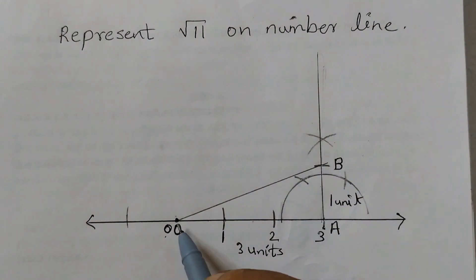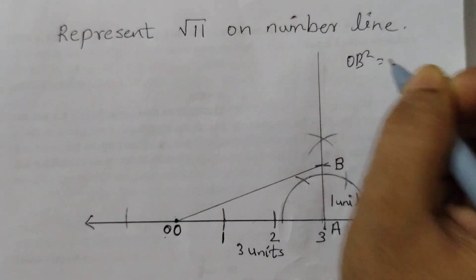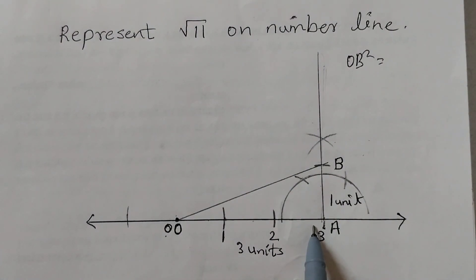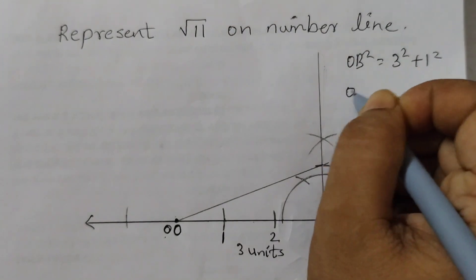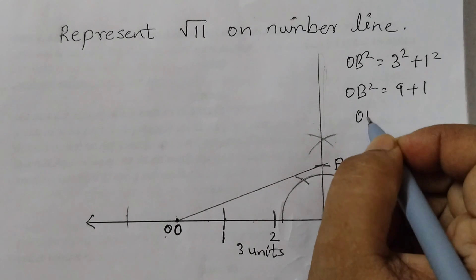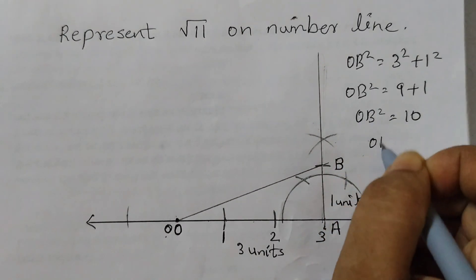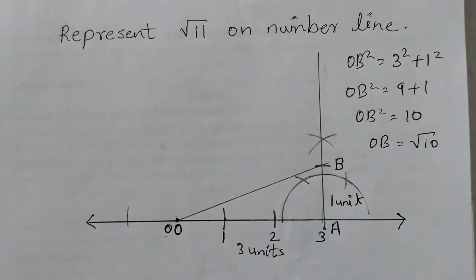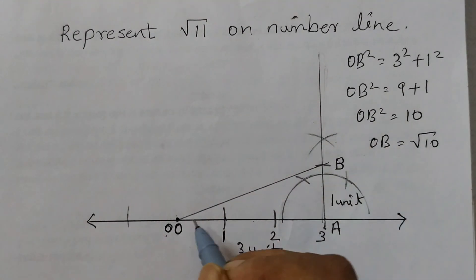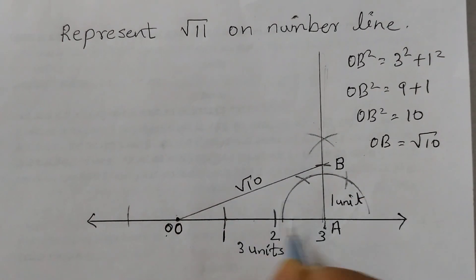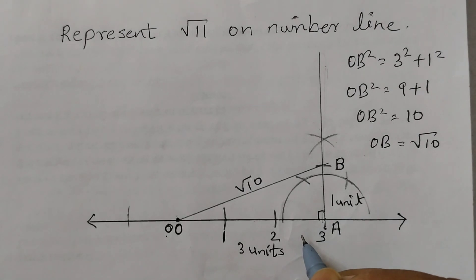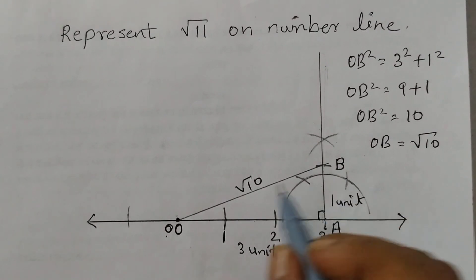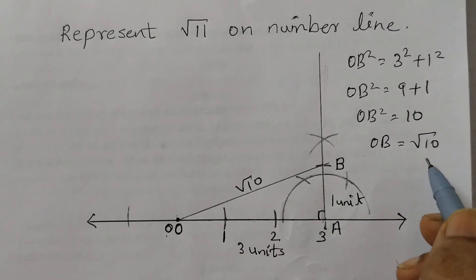This length OA is 3 units and AB is 1 unit. We need to find OB. By the Pythagorean theorem: OB² = OA² + AB² = 3² + 1² = 9 + 1 = 10. Therefore OB = √10. This is a right angle triangle with 90 degrees at A, and using the Pythagorean theorem that's how we get OB = √10.